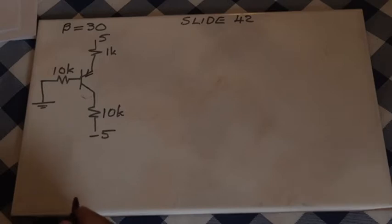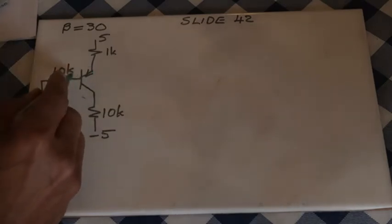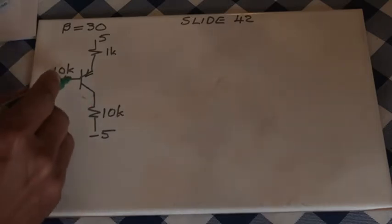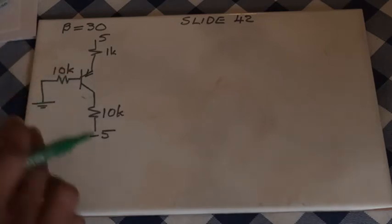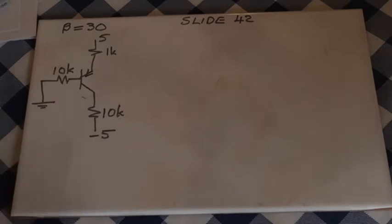Slide number 42: How to analyze a BJT circuit like this one. This is a PNP transistor with emitter, base, and collector. The base is connected through an RB to ground. The problem here is that apart from VCC and negative VEE, no other voltages or currents are given. We need to calculate them all.